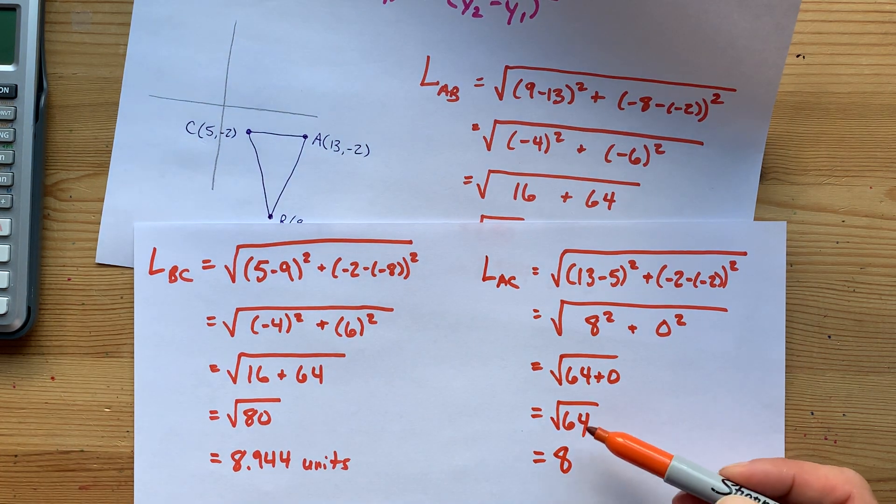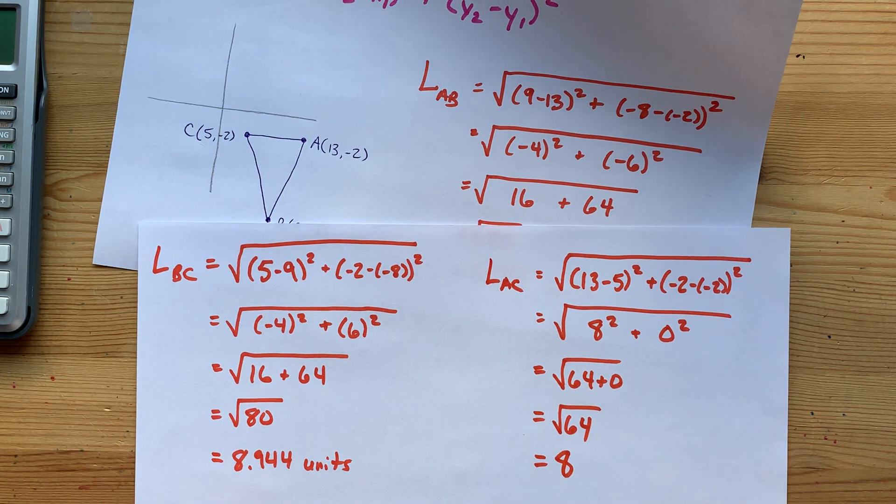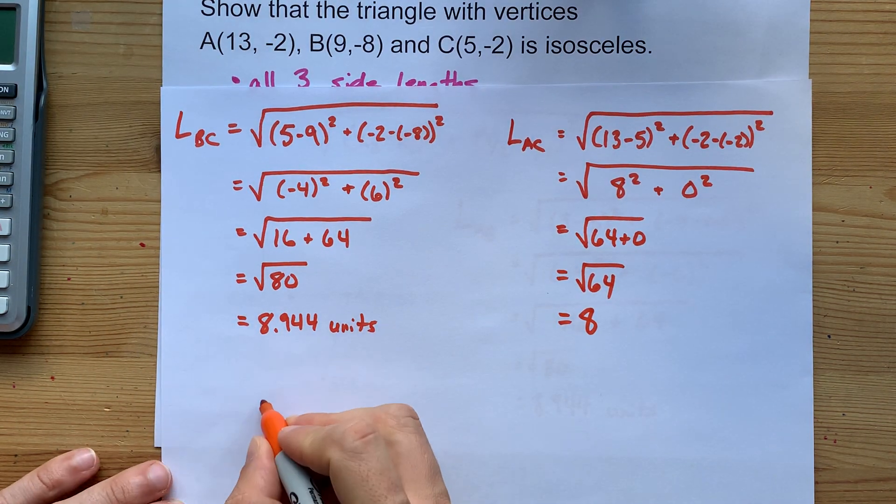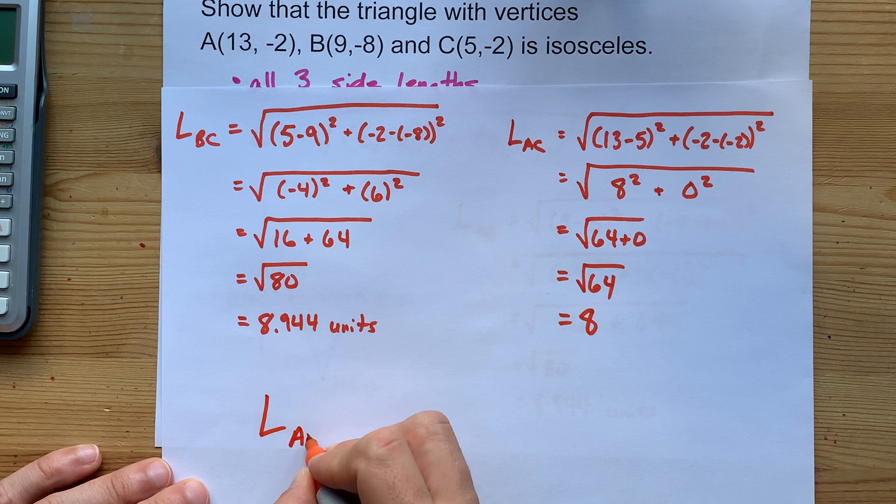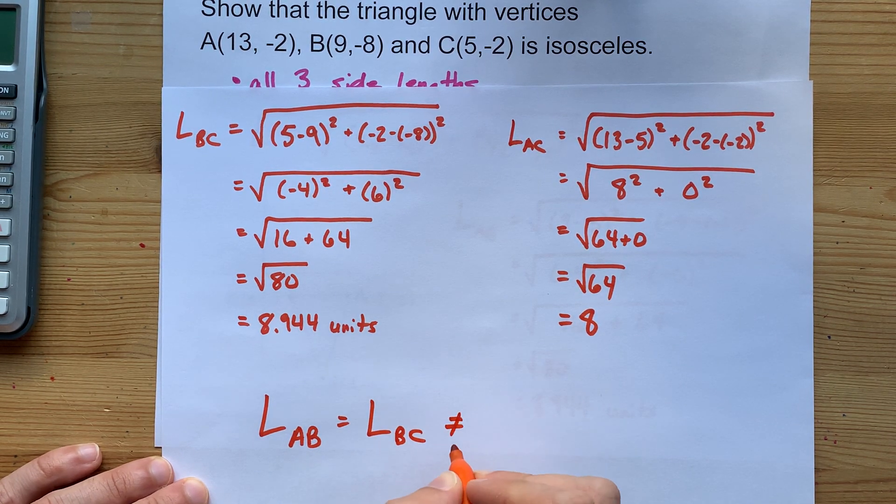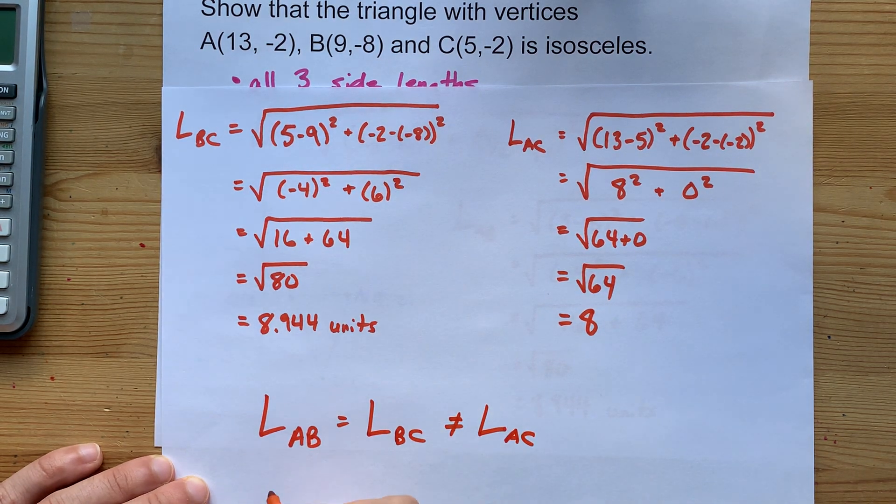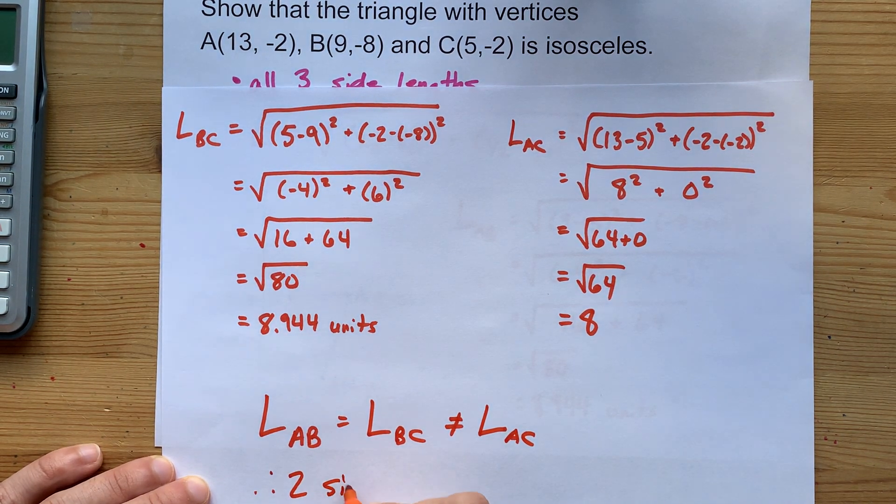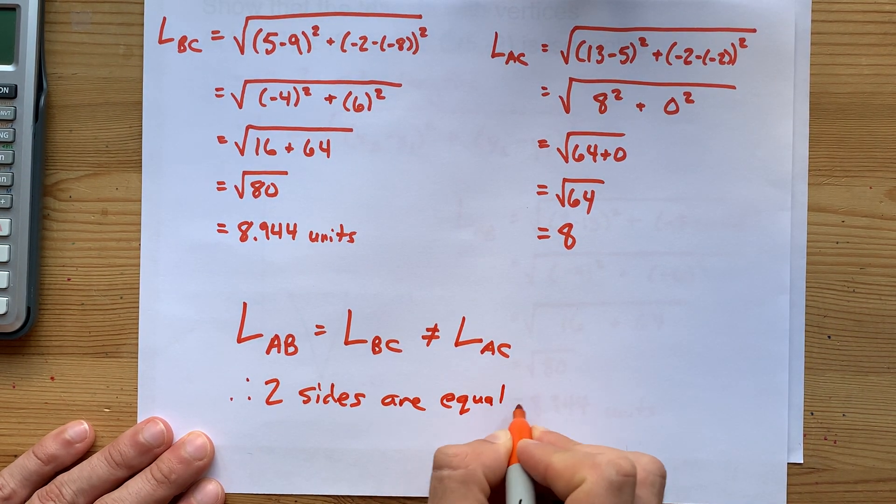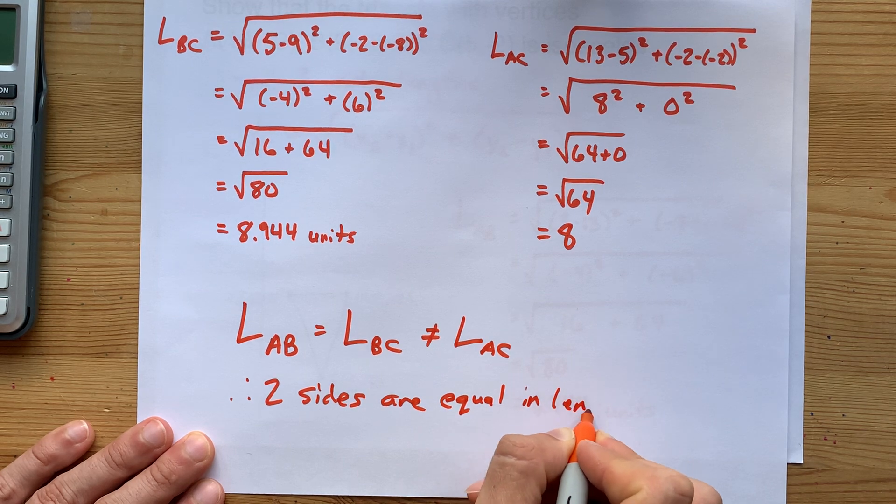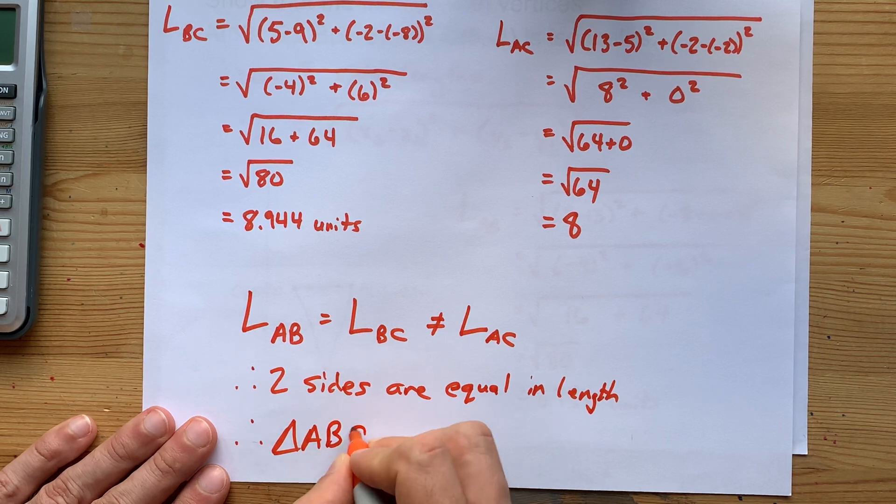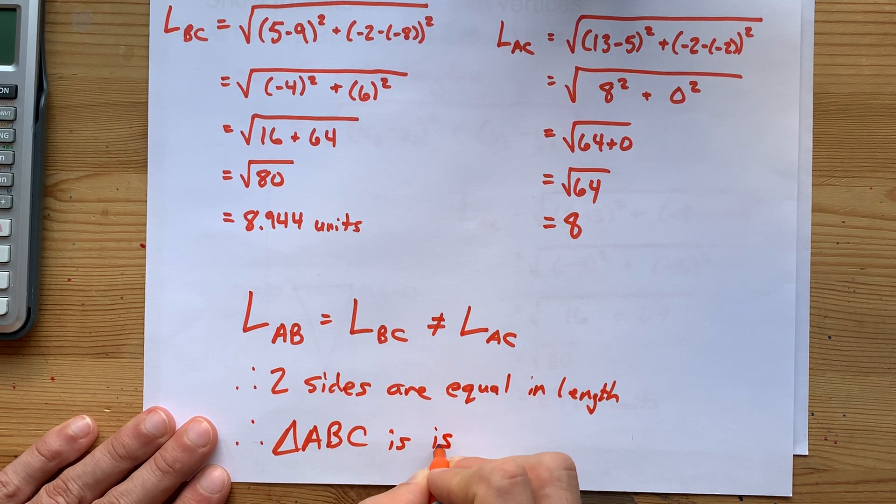Now here, 8 is the exact solution because the square root of 64 is a nice round number. So what this means is that because the length of AB equals the length of BC, which is not the same length as AC, two sides are equal in length. And therefore, in our case, triangle ABC is isosceles.